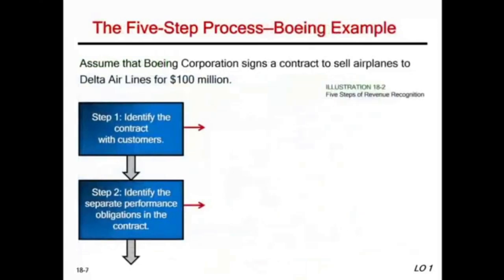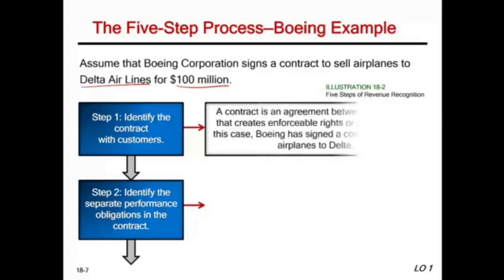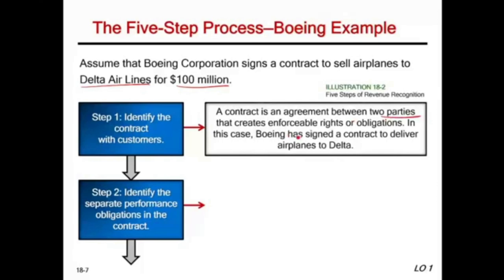Let's look at a quick example illustrating the five steps. Assume Boeing Corporation signs a contract to sell airplanes to Delta Airlines for $100 million. Step one — identify the contract with customer: yes, there is a contract, an agreement between two parties that creates enforceable rights or obligations. Boeing has signed a contract to deliver airplanes to Delta; they have an obligation to deliver those airplanes.